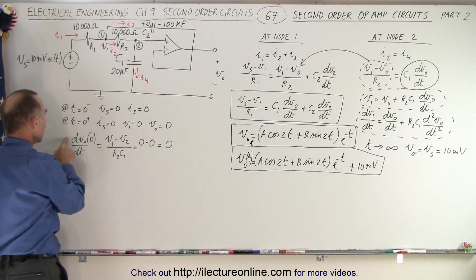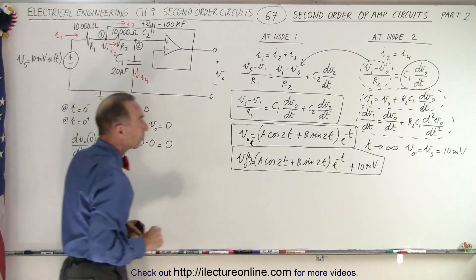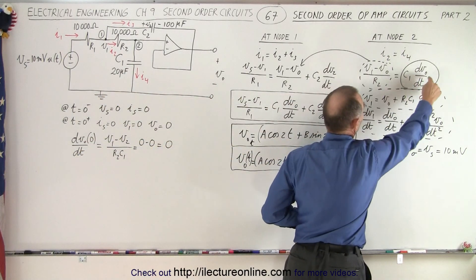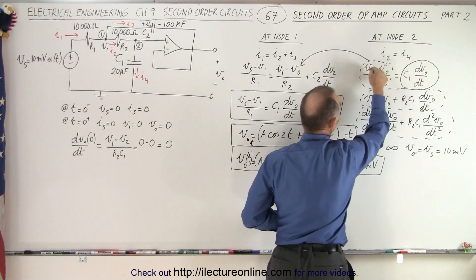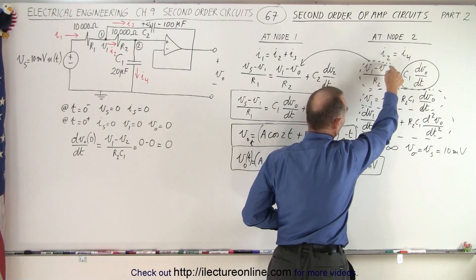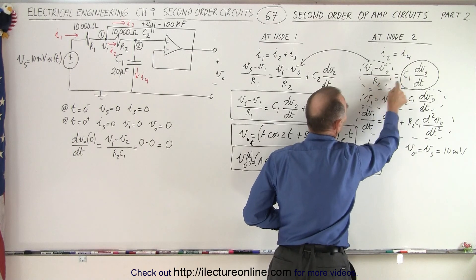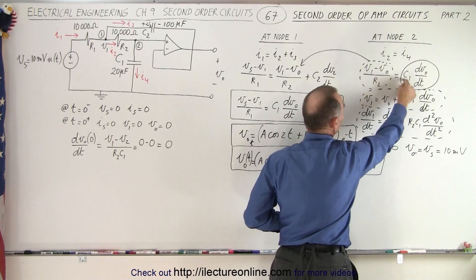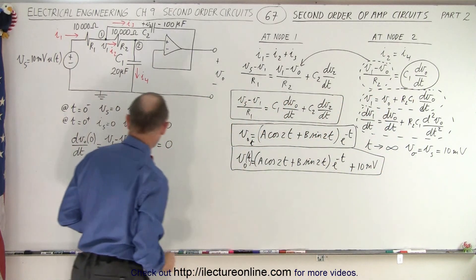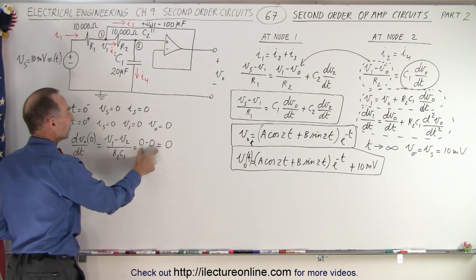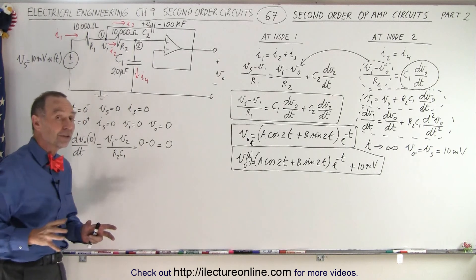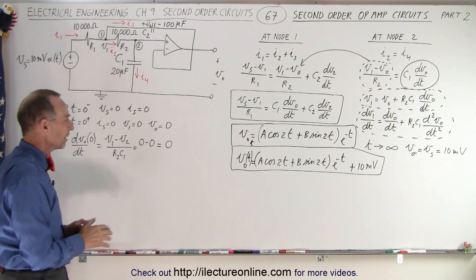In addition to that, we realize that the derivative of the output voltage with respect to time when time is equal to 0 can be calculated from using this equation right here. So the derivative with respect to time of the output voltage is the difference of V1 minus V0, or the output voltage, divided by R2 times C1. And since these two are still 0 at that time, then we know that the derivative of the output voltage will also be 0.